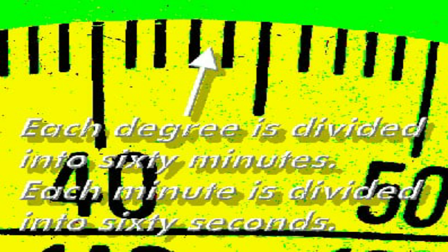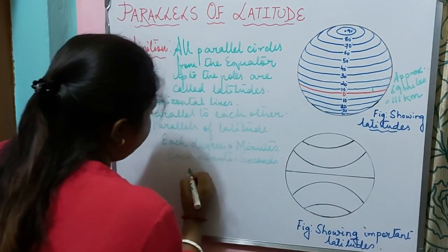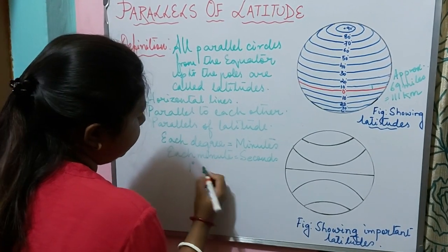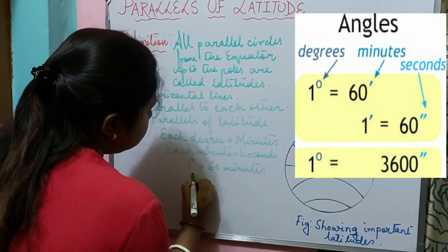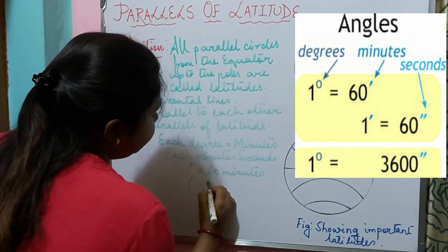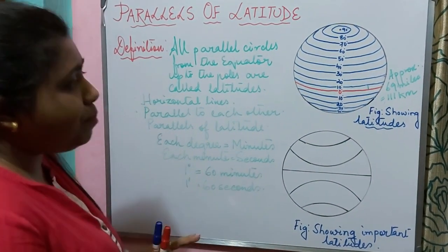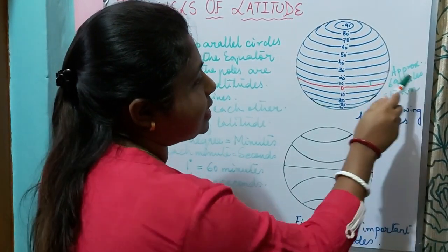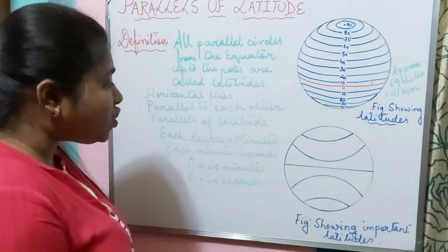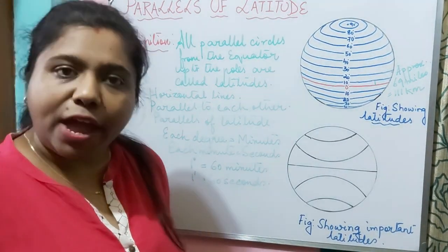Each degree is divided into 60 minutes, and each minute is divided into 60 seconds. So if it is one degree, that is divided into 60 minutes, and one minute is divided into 60 seconds. Each degree of latitude is approximately 69 miles apart, that is 111 kilometers, and each degree is divided into minutes and each minute into seconds.